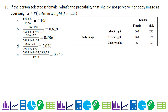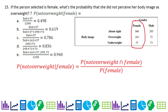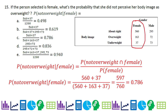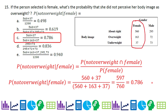Problem 15: if the person selected is female, what is the probability she did not perceive her body image as overweight? We calculate P(not overweight | female) = P(not overweight and female) ÷ P(female). The 163 females are those who consider themselves overweight; everyone else does not. So we add 560 and 37, then divide by the total number of females to get approximately 0.786. The tricky part was recognizing you had to combine two categories for 'not overweight.'